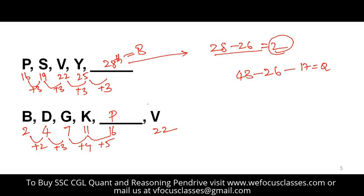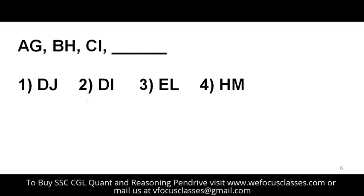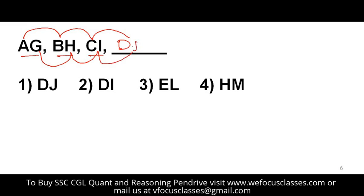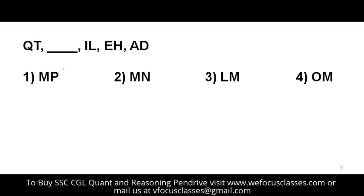The next problem is AG, BH, CI, and the blank. Go to the corresponding first letters: A, B, C — the next is D. Then the second letters: G, H, I — the next is J. So the answer is DJ.